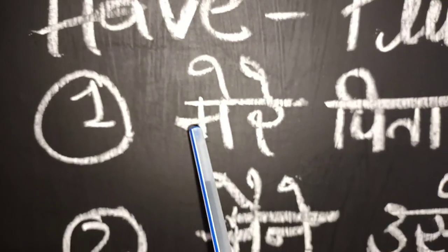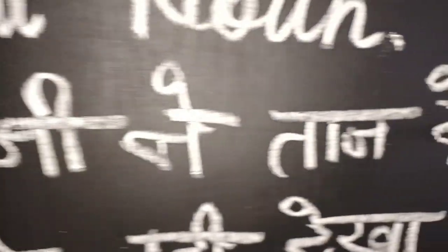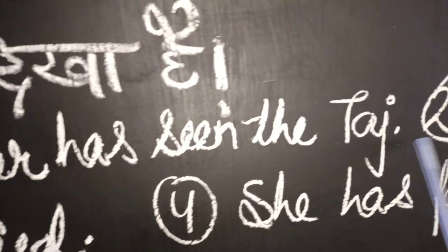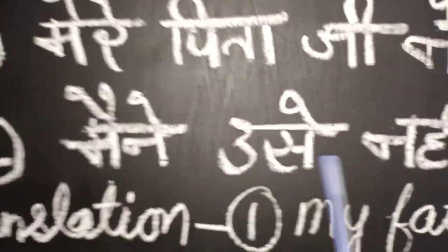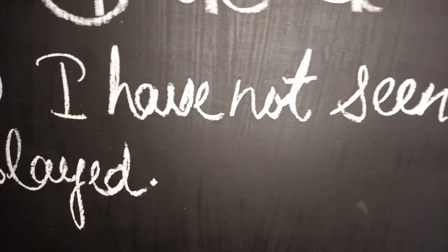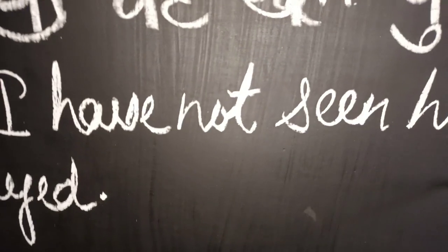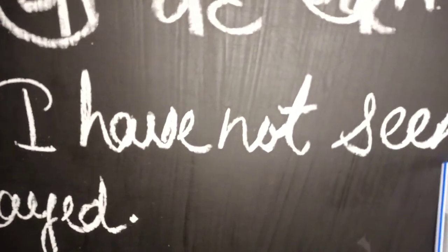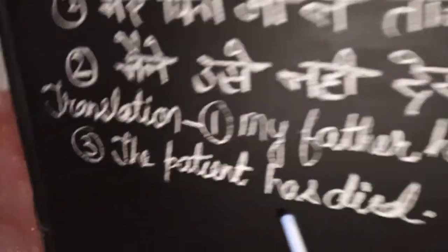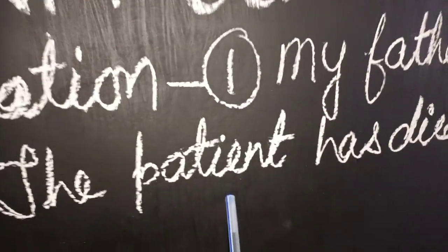Let me put some sentences. First sentence: 'My father has seen' — translation: 'My father has seen.' Sentence two: 'I have not seen him' — translation using present perfect tense: 'I have not seen him.' Third sentence — the patient has died — translation: 'The patient has died.'